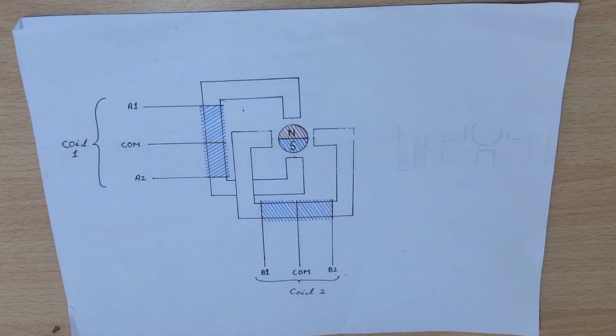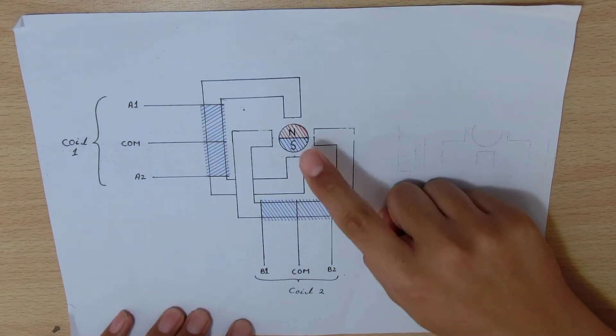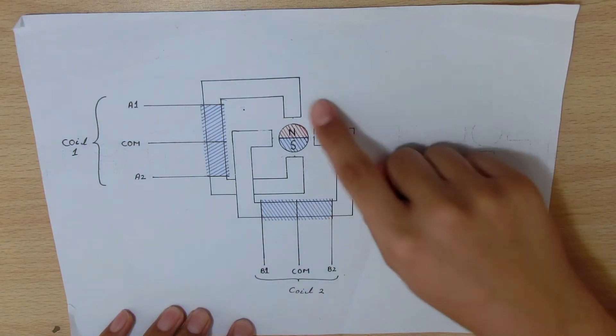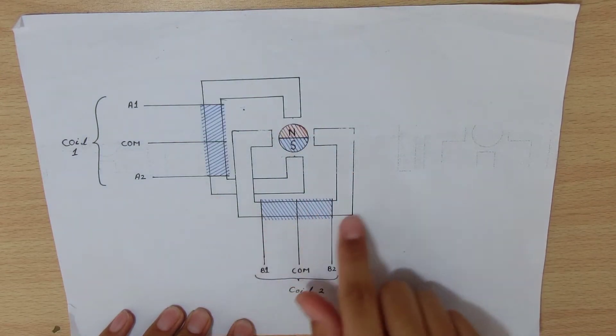This is a diagram of a simple unipolar stepper motor. In the center here we have the rotor. The rotor is surrounded by the stators, both have a coil wrapped around them.